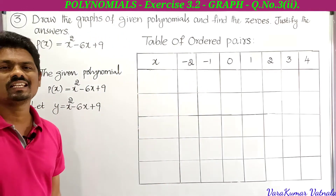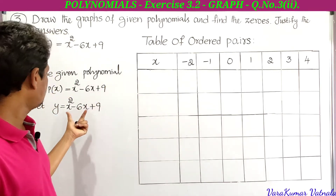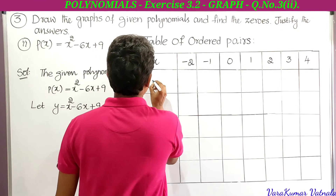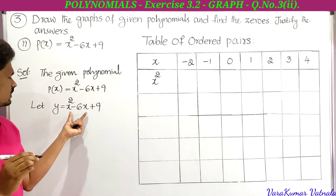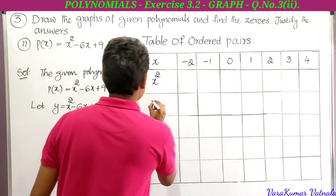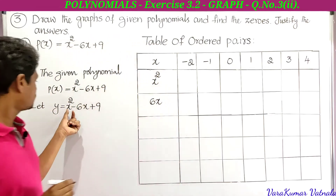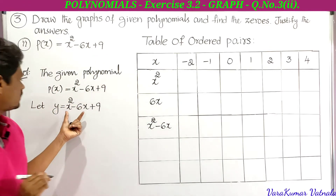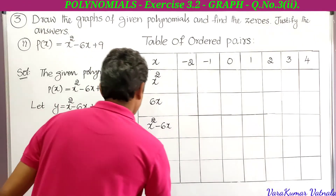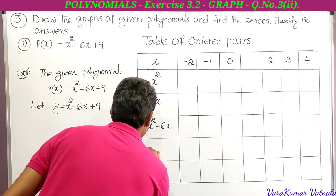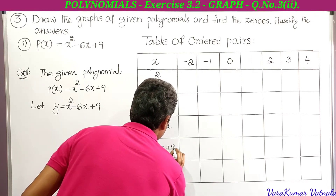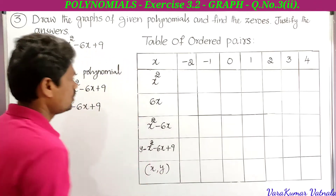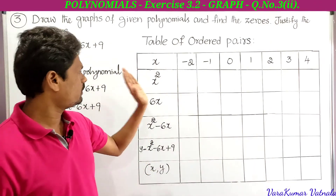For these x values, we substitute into y = x² - 6x + 9. The polynomial has x², then minus 6x, then plus 9 which gives y. So the table columns are: x, x², 6x, x² - 6x, and y (which is x² - 6x + 9), and finally the ordered pair (x, y). This is our table of ordered pairs — very, very important.